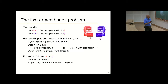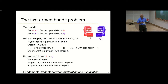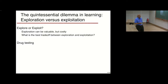The idea is maybe we should play each arm a few times — that's called exploration. Then you choose whichever is better and play it — that's called exploitation. There is a fundamental trade-off between exploration and exploitation in a lot of machine learning. The quintessence is exploration or exploitation, and exploration can be valuable but it's costly.